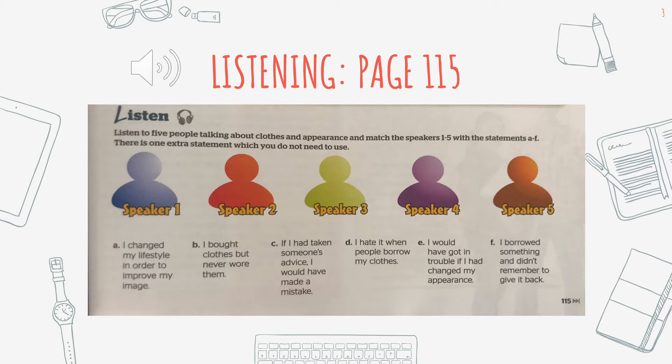Speaker one: Two weeks ago I went shopping with my sister. She wanted to buy a pair of jeans and I needed a new dress for the end-of-school party. I usually borrow something from her, but this year I really wanted to make a fashion statement. We spent ages looking around until we settled on two dresses — a black one and a red one. My sister was insisting that I buy the red one, but I wasn't so sure. Luckily for me, I chose the black one because at the party there were about six girls all wearing the same red dress. They felt silly and I looked great.